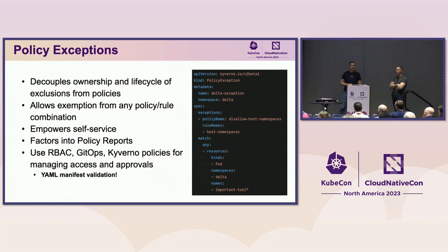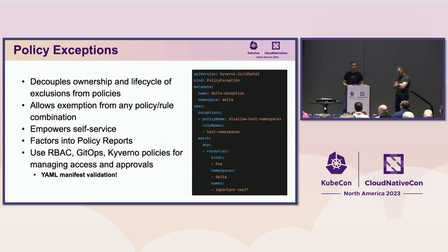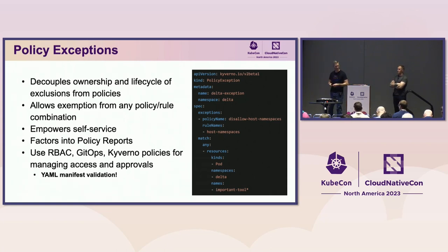Policy exceptions are a custom resource type that decouple the ownership and lifecycle of exclusions from policies. This allows self-service: developers who don't have access to look at rules but need an exception can request a policy exception resource. Exceptions also factor into policy reports. You can use RBAC, GitOps, and even other Kyverno policies to provide guardrails for exceptions, including YAML manifest validation.